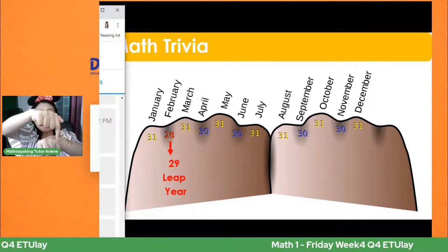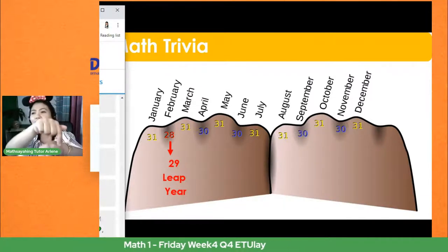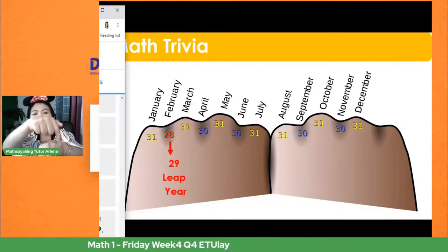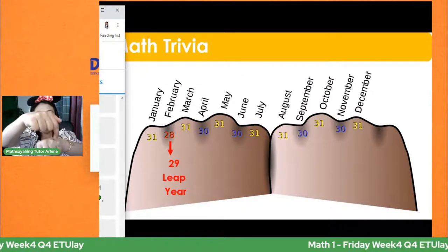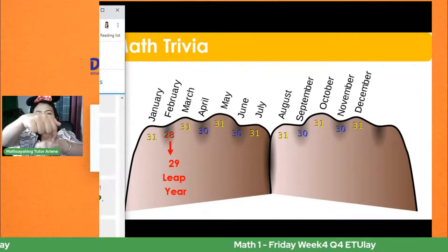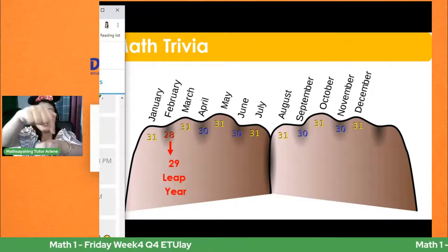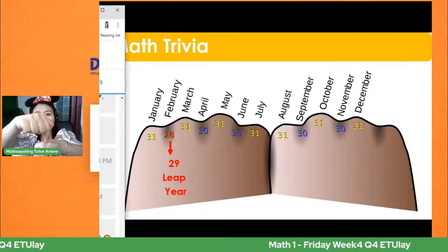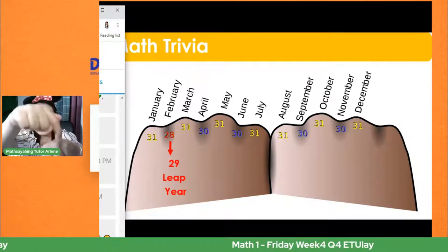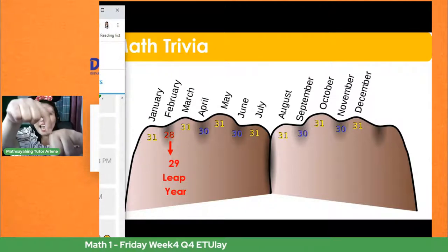Yung gitna — sa pagitan ng ating knuckle, yun ang February. January, February, o yung pangalawa nating joint — March, April, o yung gitna uli — May, June, July. Nakita ba? Ulitin ko ha: January, February, March, April, May, June, July.